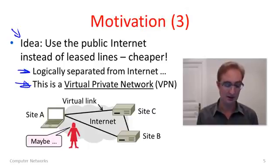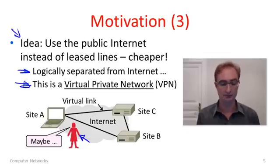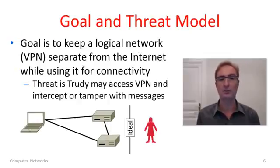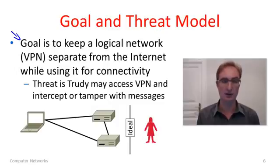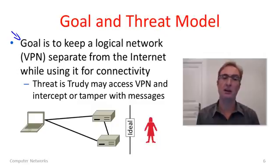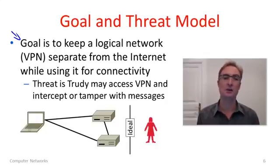Now, since we're all using the internet, Trudy maybe has a chance of messing up your security. So the goal and threat model for a VPN: the goal is to maintain our own logical network — a virtual private network — that runs on top of the internet yet is separated from it, so traffic can't go from the public internet onto the VPN or vice versa, except via specially designated gateways that might scrub traffic for that purpose.